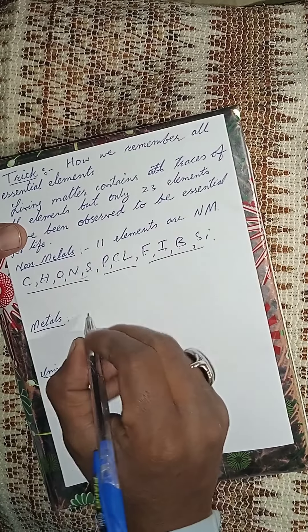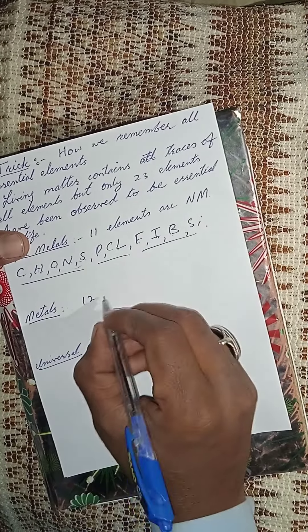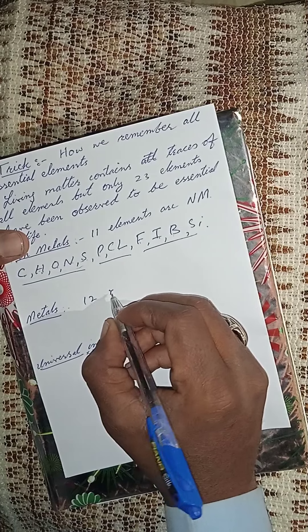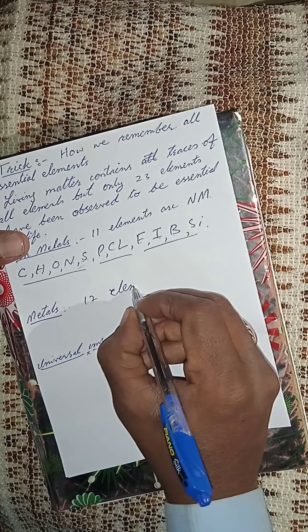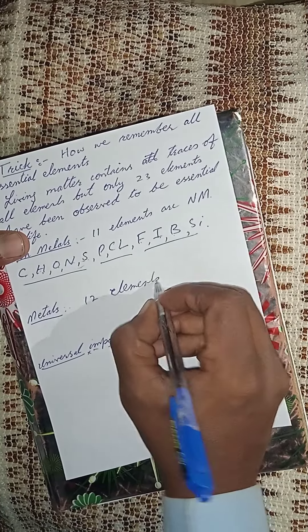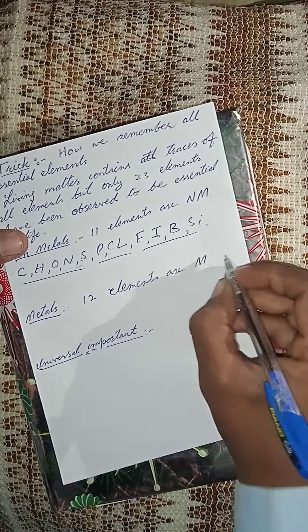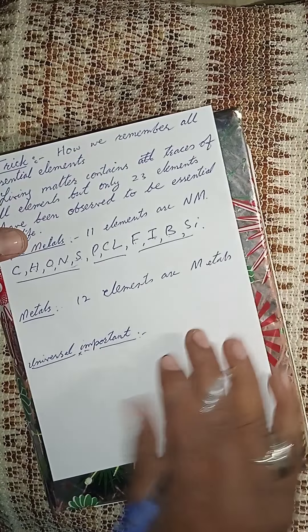Now for the metals — 12 elements are metals. There are 12 essential metal elements.